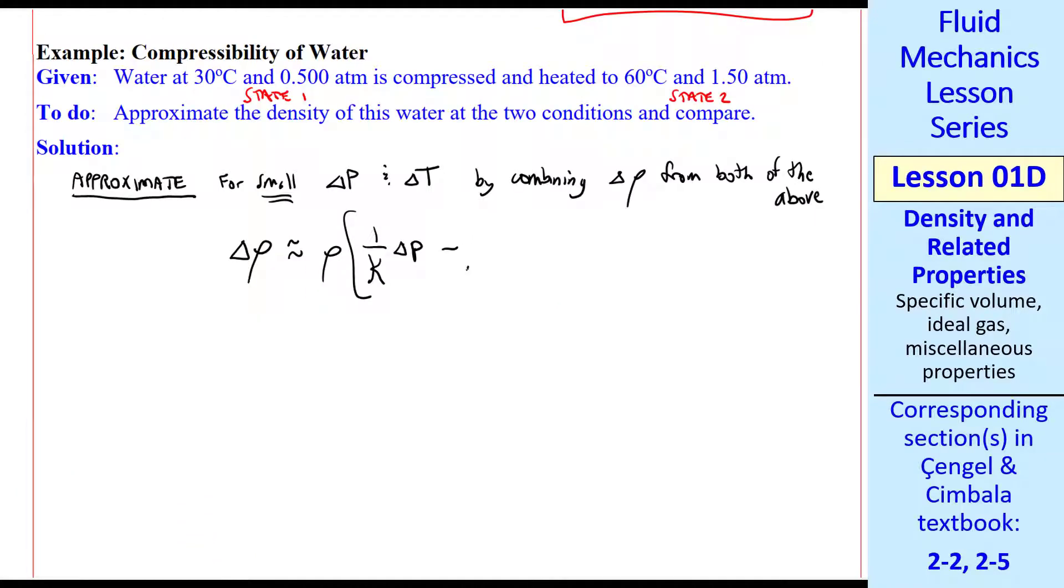delta rho from here is rho delta p over kappa. And then we scroll up again to this one where delta rho is negative rho delta T beta. So we plug that in, make sure you include the negative sign, rho beta delta T with the negative sign.